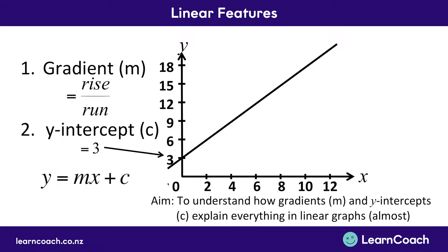The whole reason we learn gradient and y-intercept is so we can put these numbers — m for gradient and c for y-intercept — into our equation: y equals mx plus c. This equation is really worth remembering because it's going to come up a lot in your exams. The y and x just mean the y-axis and x-axis, so you always ignore them. The m is your gradient — your slope, how steep it is — and c is the y-intercept, where it crosses the y-axis. You may need to relate slope to real-life situations like distance and time, starting points, or rates.